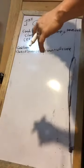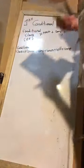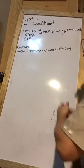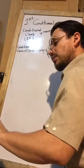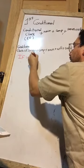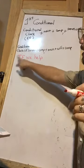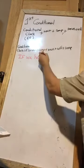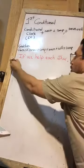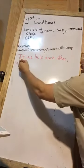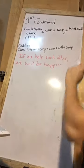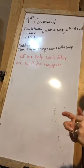Let's do the first example from the book. It says: 'We will be happier if we help each other more.' Since we are starting with if, we write: 'If we help each other' — that's if, then the noun 'we', then complement 'help each other' — then a comma, then 'we will be happier.'